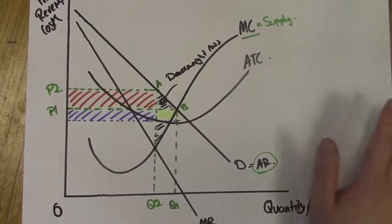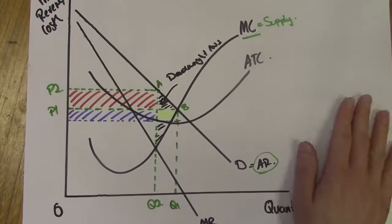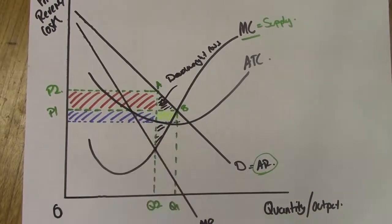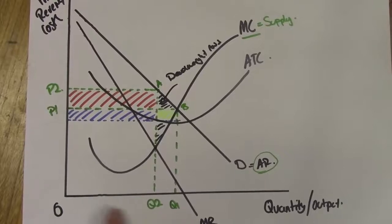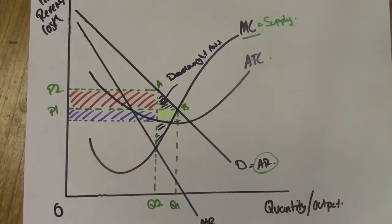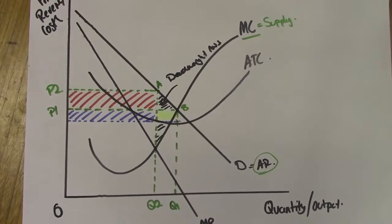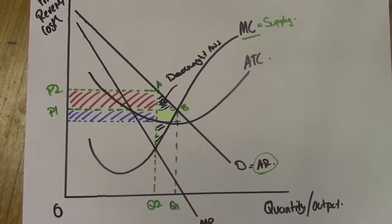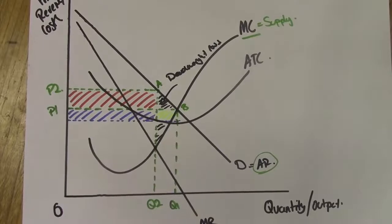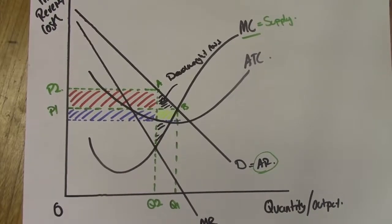This diagram shows so much: it shows supernormal profits being made, price determination, welfare loss, the allocatively efficient level of output, changes in output and price level if the firm changes its objective from profit maximization to allocative efficiency, and the consequences of changing price. Remember, the monopoly is a price maker — if they change their prices, the consequence is that they lose profit, shown by losing the red area and gaining the yellow area.